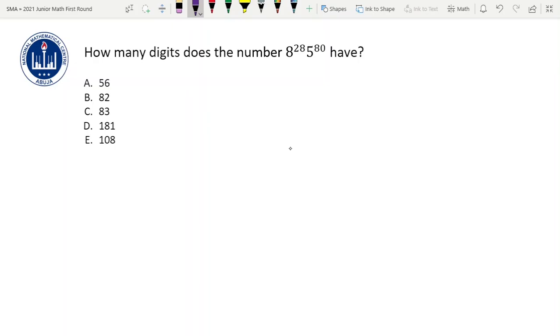Find how many digits the number 8 raised to power 28 times 5 raised to power 80 has. So let's just write down this number here. 8 raised to power 28 times 5 raised to power 80.